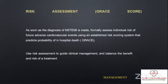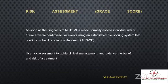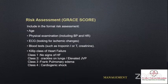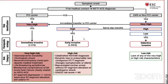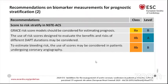As soon as the diagnosis is established, formally assess individual risk for future adverse cardiovascular events — the guideline recommends using the GRACE score. The GRACE score components include age, physical examination, ECG, blood tests, and Killip class of heart failure. A GRACE score total of more than 140 indicates that in-hospital mortality is 2.9%, and therefore the guideline indicates this patient should go for early invasive coronary angiogram in less than 24 hours. Dr. Hinchi will go through invasive and non-invasive therapy.